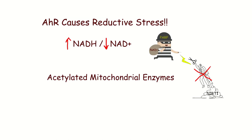SIRT1 is also an NAD-ase and requires NAD+ to do its job. So if PARP steals all the NAD+, SIRT1 can't do its job, your mitochondrial enzymes become acetylated and cannot function, and you have a low metabolic rate.